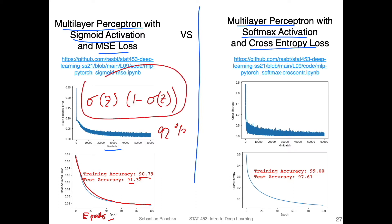What happens is that we have the derivative of the sigmoid function in the chain rule, and this will be a number smaller than one, which can be a little bit problematic. Because you may have these small numbers multiplying things together, and then you have a vanishing gradient problem — the gradient becomes very small and you may not update the weights. If you use the cross-entropy loss, it's a little bit less of an issue.